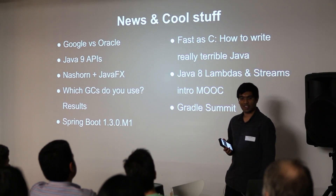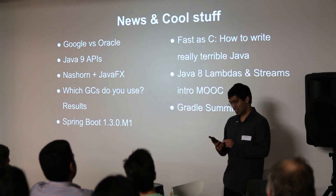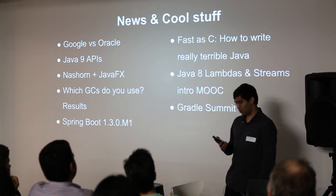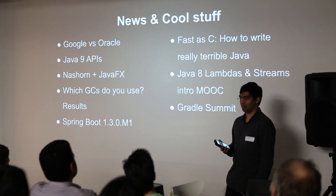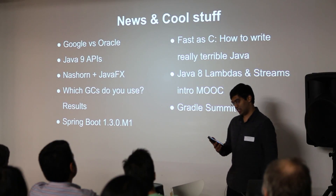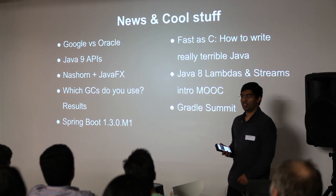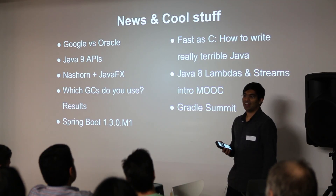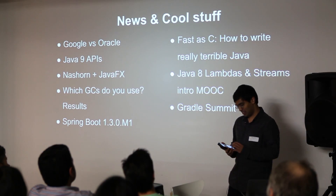Some Java news. Java 9 APIs — some of them have been announced. We're going to have HTTP 2.0 support, possibly G1 as the default garbage collector, a Java shell — anyone who's used Scala before might be interested in that — and some process API improvements. Unfortunately, what's not going to be in Java 9 are a standardized JSON API and the Java Money and Currency API. That's probably going to be in Java 10.